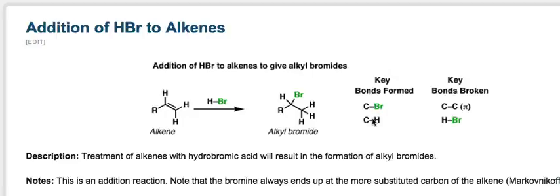The second important pattern is that where we put the bromine is not random. Looking at the alkene: the left-hand side is attached to one R group and one hydrogen — it's more substituted, meaning more carbon atoms. The right-hand side is attached to two hydrogens — less substituted. The rule is that when we add hydrobromic acid, bromine always ends up on the more substituted end of the alkene, and hydrogen always ends up on the less substituted end. This pattern is called Markovnikov's rule, and this reaction is called Markovnikov selective.